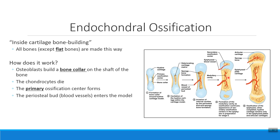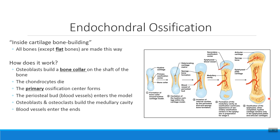As we continue to grow that bone tissue, we then send blood vessels into the ends of our bone. When blood vessels enter the ends of my cartilage model, we start to build what are called secondary ossification centers. Around the time of birth, we build these secondary ossification centers where bone tissue grows in the epiphyses of the bone as well.